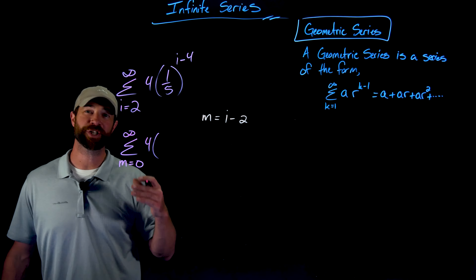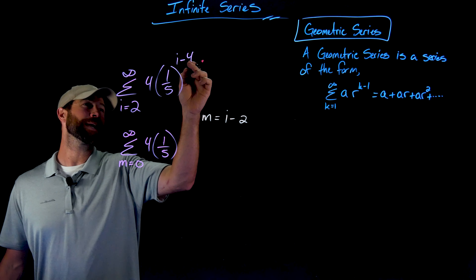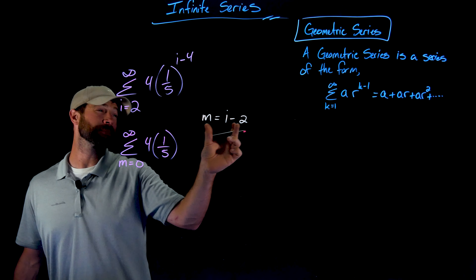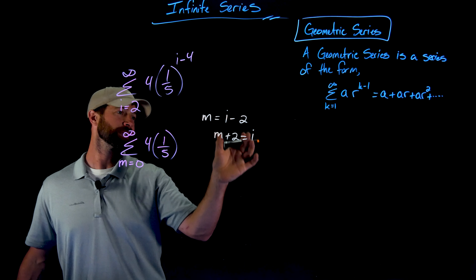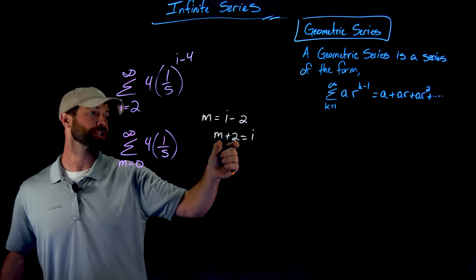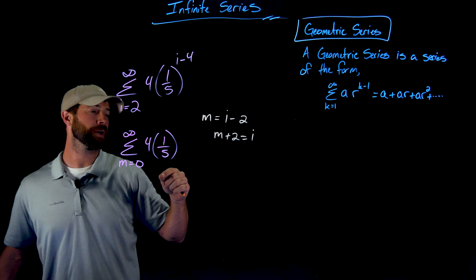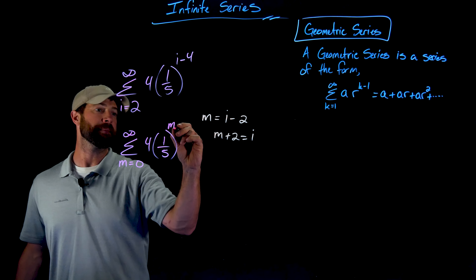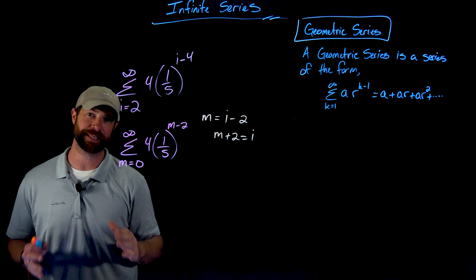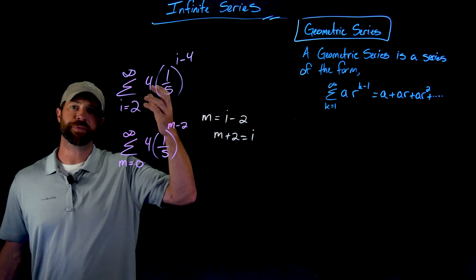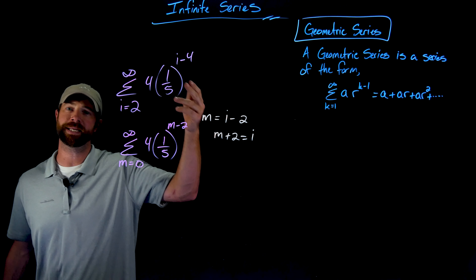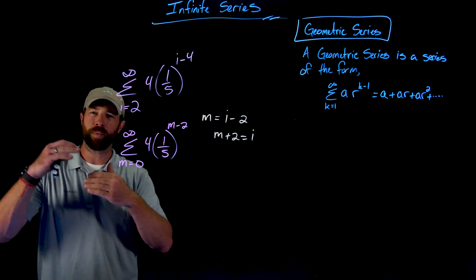Importantly, I need to change every instance of i into m using this relationship. We have 4 times one-fifth raised to the i minus 4. If I have i minus 4, I can manipulate this — since m plus 2 equals i — by plugging in m plus 2 for i to get m plus 2 minus 4, which gives m minus 2. The important statement is that both infinite series are exactly the same. The first term in each gives an exponent of negative 2, and they iterate one at a time up to infinity.